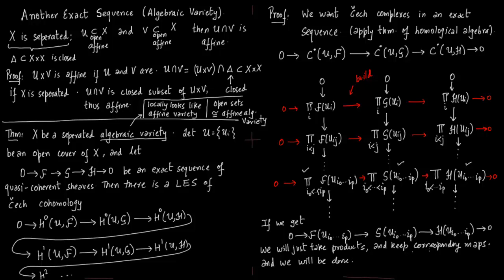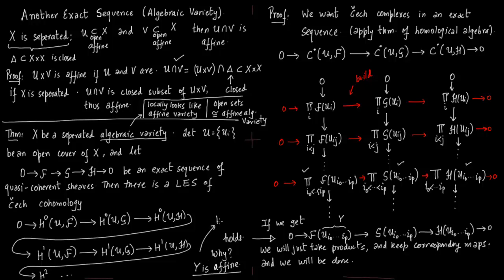If we get this, then we can form the red arrows everywhere and we will be done. So we have to show this chain holds. Call the set Y = U_{I₀} ∩ … ∩ U_{Iₚ}. This intersection is affine by the lemma we had at the start.